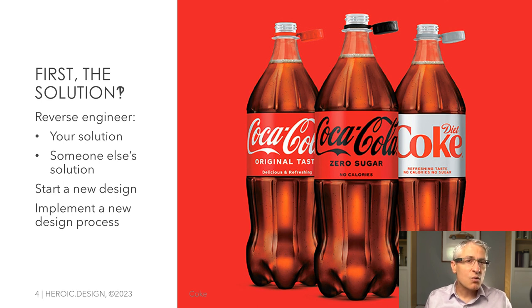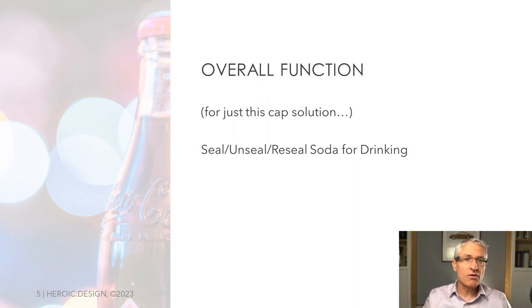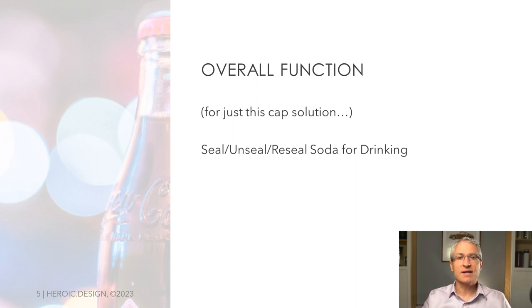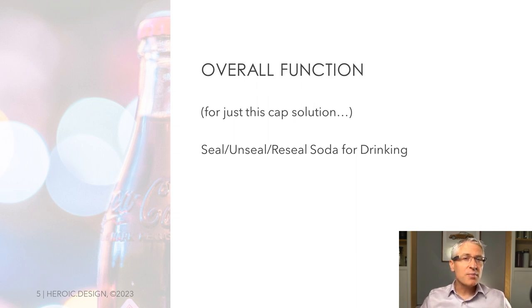Now we can work through the sub-functions and see if we can keep all our options open. First off, there are no right and wrong answers here. I'm very pragmatic when I create overall functions and sub-functions — it really comes down to what is useful as I'm working through the rest of the design. Often, when I get to the brainstorming phase, I'll go back and adjust the sub-functions so they're more useful. And when I'm doing a full design revision, I start by updating the functional map to my latest thinking.